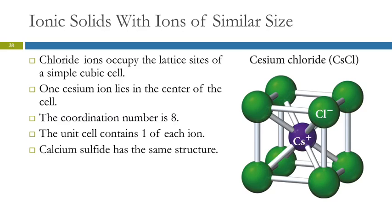This looks very much like a body-centered cubic cell. The difference is that when we talk about the unit structure, we're looking at only one kind of ion. We describe this in terms of the chloride ions — the green balls form a simple cubic unit cell. The coordination number is 8: the cesium ion is in direct contact with each of the ions at the corners.